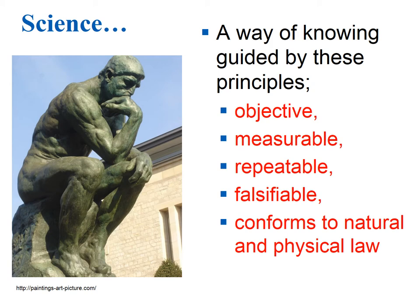Because we are in a science class, we're going to follow certain guiding principles. Those principles include being objective — meaning we want to have an accurate interpretation of reality. When we make an observation and try to explain it, we don't want to interject our biases or opinions. Science should also be measurable; we'll generally use the metric system — units like Celsius, meters, liters, and grams. One of the major principles of science is that it's repeatable.